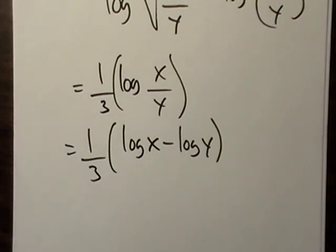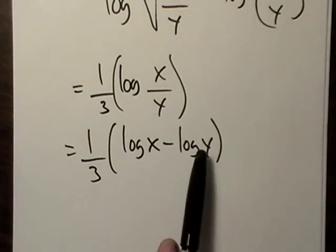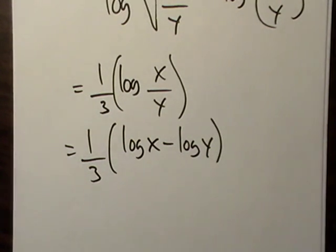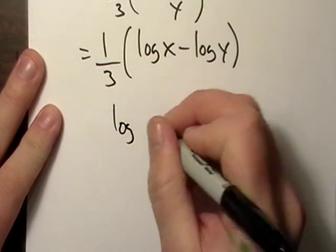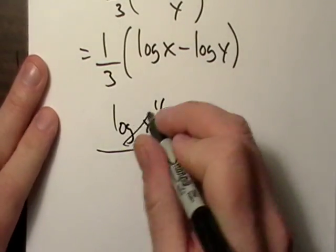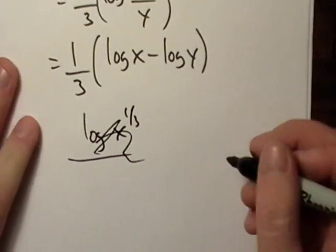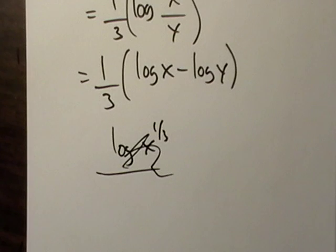Yeah, so there we go right there. And these were base 10 logs. If it's not written there, it's assumed to be base 10. So let's try it a different way. Let's say we went log x to the 1/3 over... I'll tell you what, in the next video, I'm going to try this a different way. Okay. And see if we get the same answer. All right. See you then.